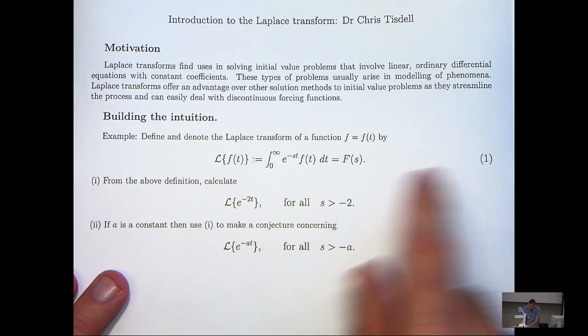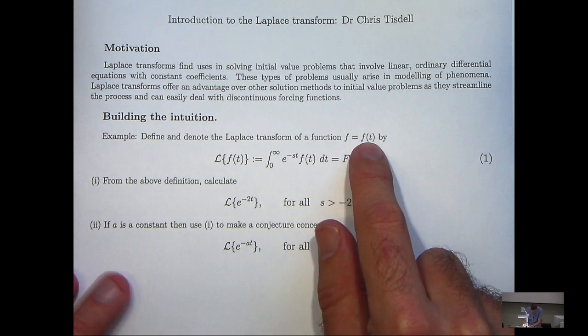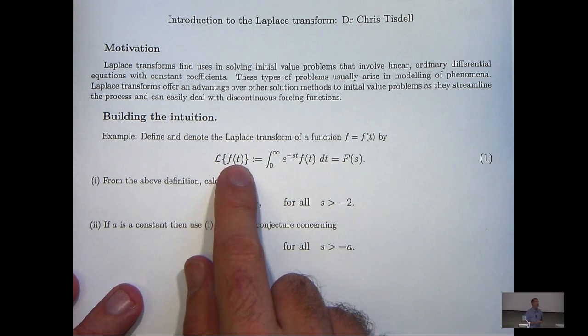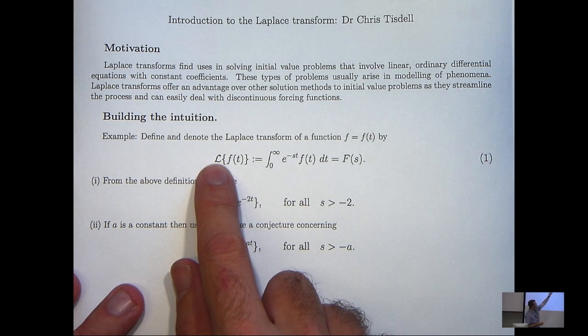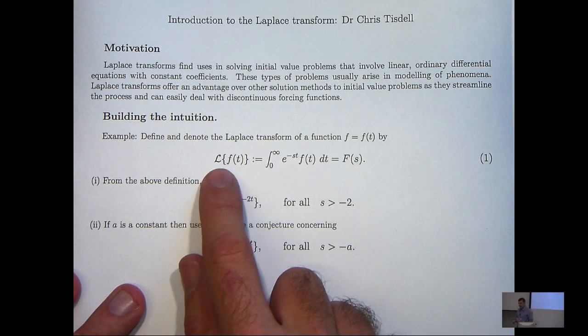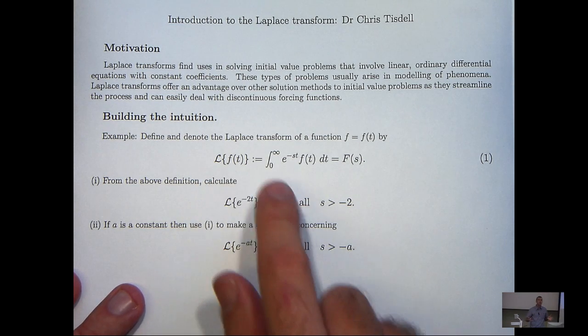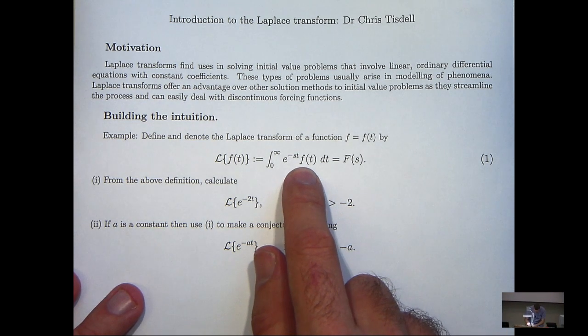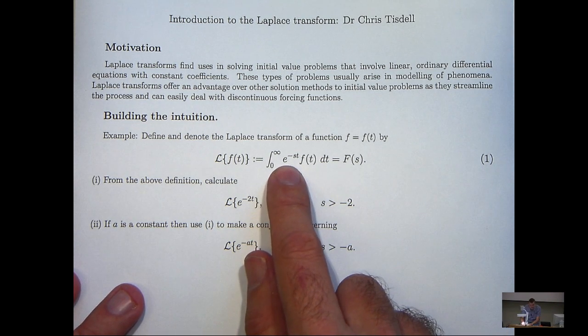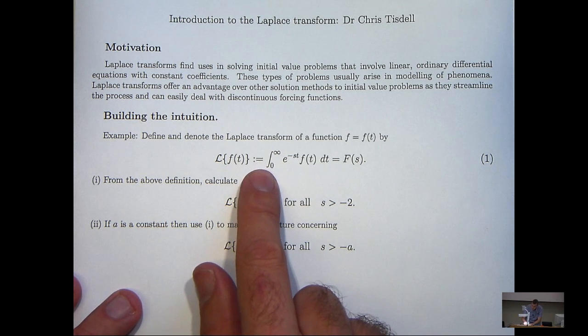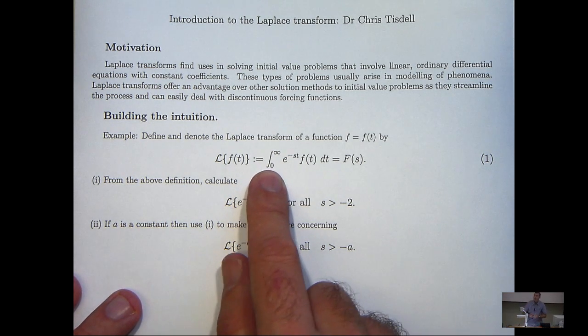Now, if we have a function, little f, then we denote the Laplace transform of little f by this curly L and brackets of little f. And essentially, the Laplace transform is an integral transform. So you can see here that you take your function, little f, multiply it by this exponential function, and then integrate with respect to t over this half line.